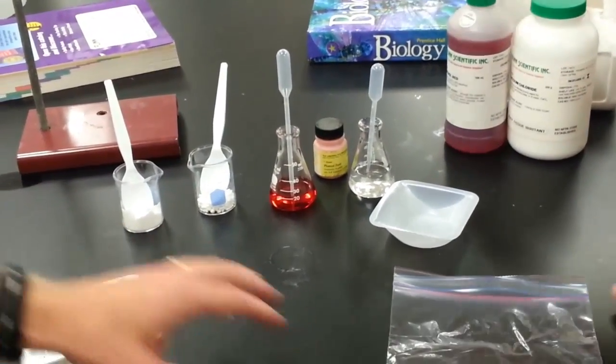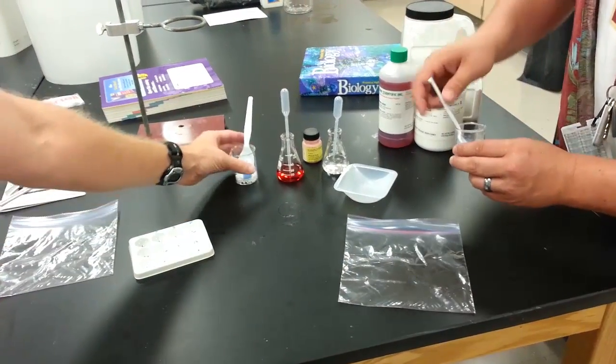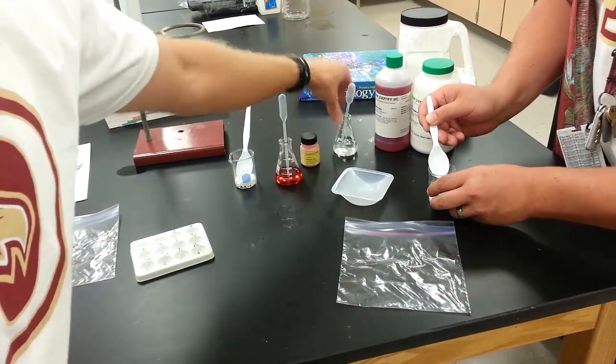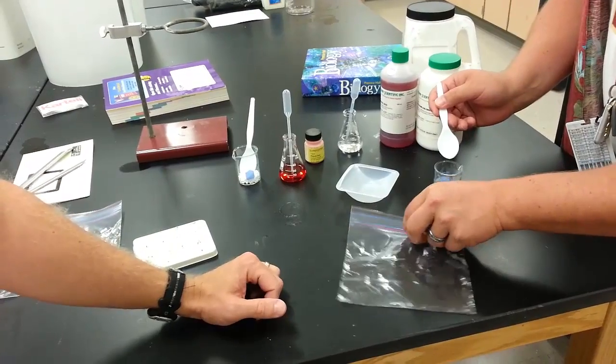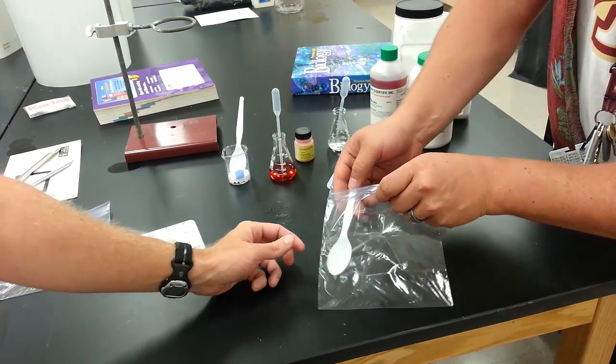For today's experiment, we have a Ziploc baggie. You're going to put the three chemicals, no water for this part, in two different locations in the bag. Start off by putting one in the corner, like so.